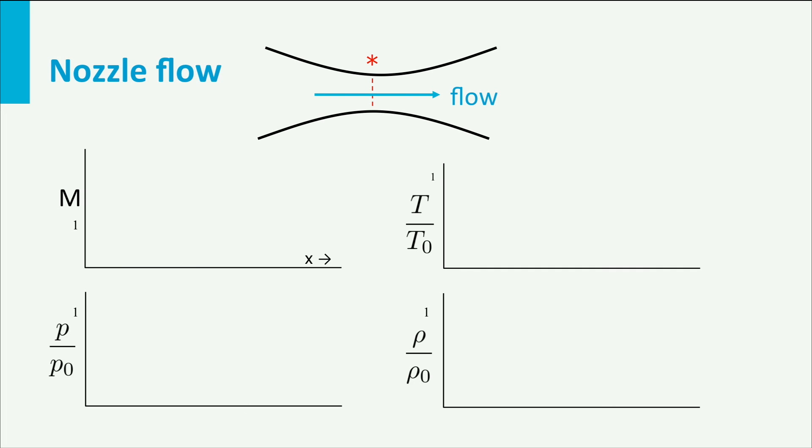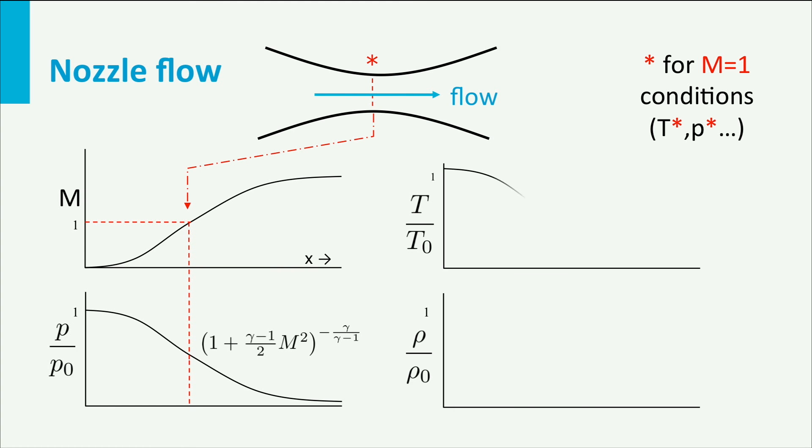This next slide shows the development in the flow properties as the air flows through the channel. All properties in the throat are denoted with a star, so P star, rho star, T star and so on. As the Mach number increases, the pressure, temperature and density decrease.